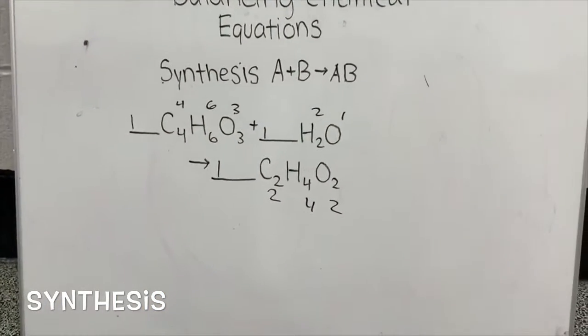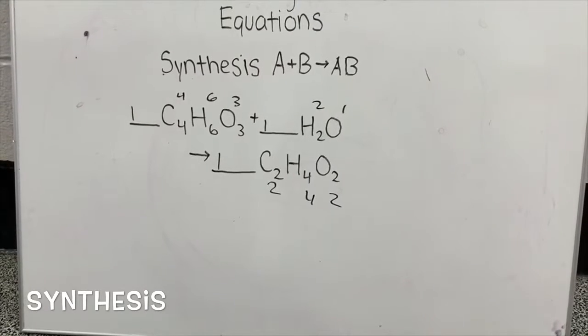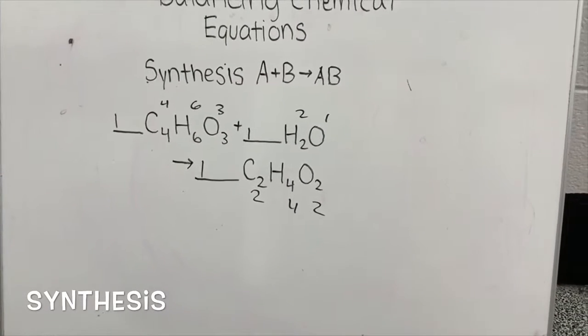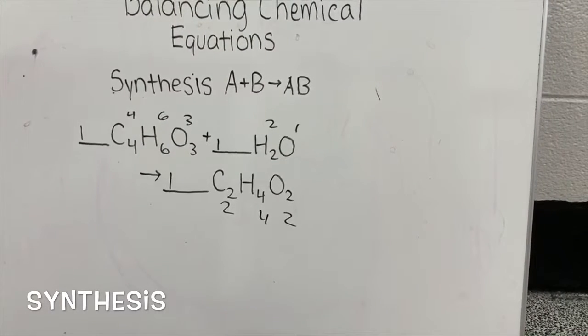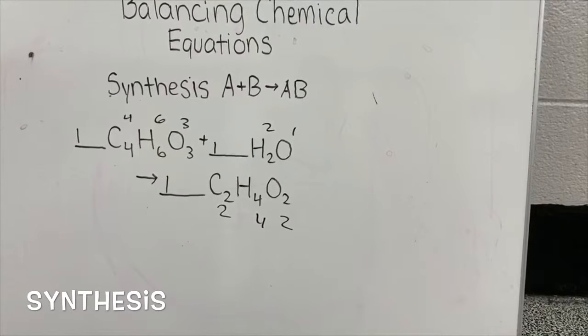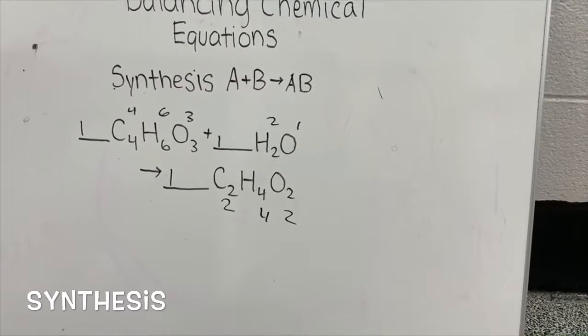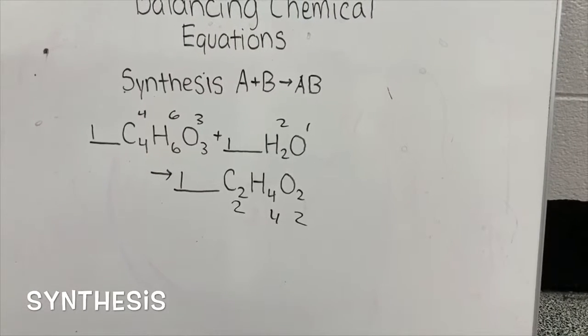Next, you look at the product and balance the first element to the reactants. C2 and C4. There are two Cs in the product while there are four Cs in the reactants. We have to find a number that will make the two Cs in the reactants side equal to the four Cs on the product side. So we'll double it by putting a two in front of the product.